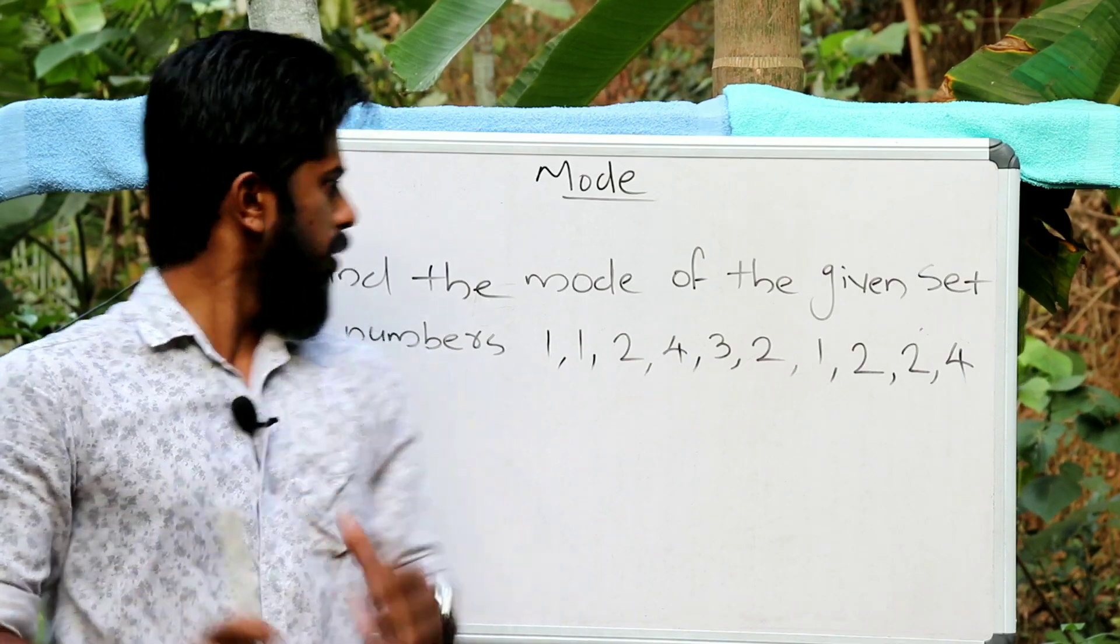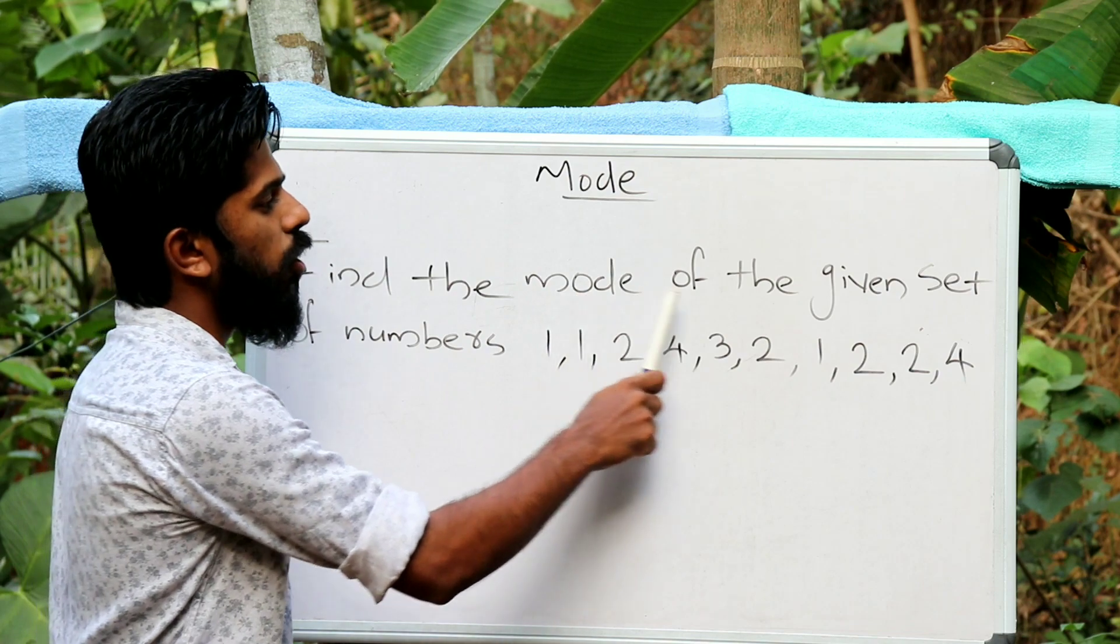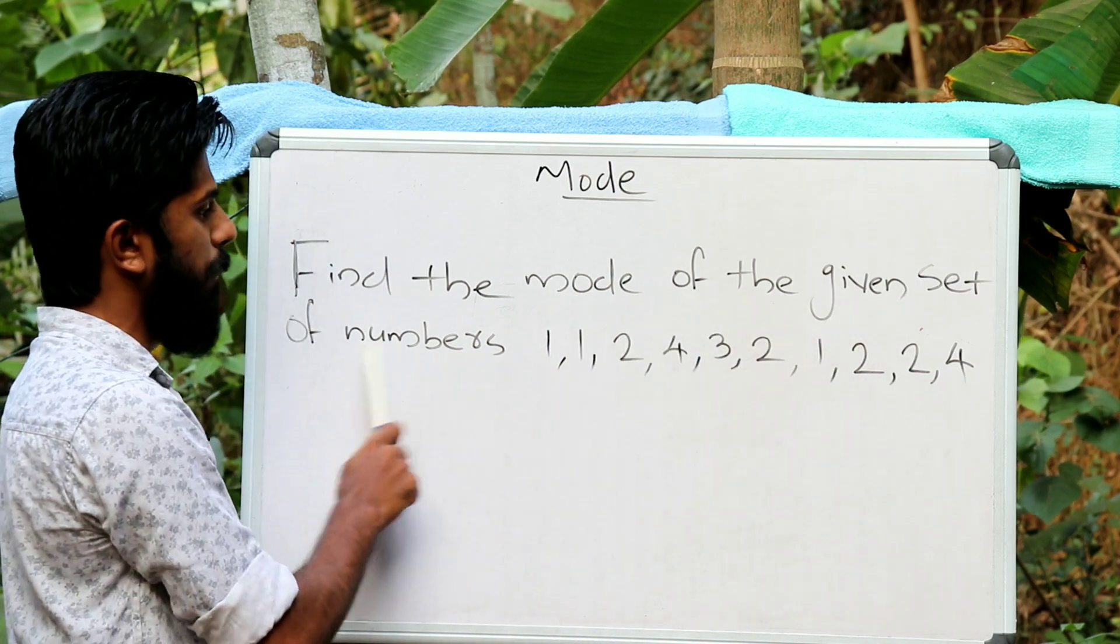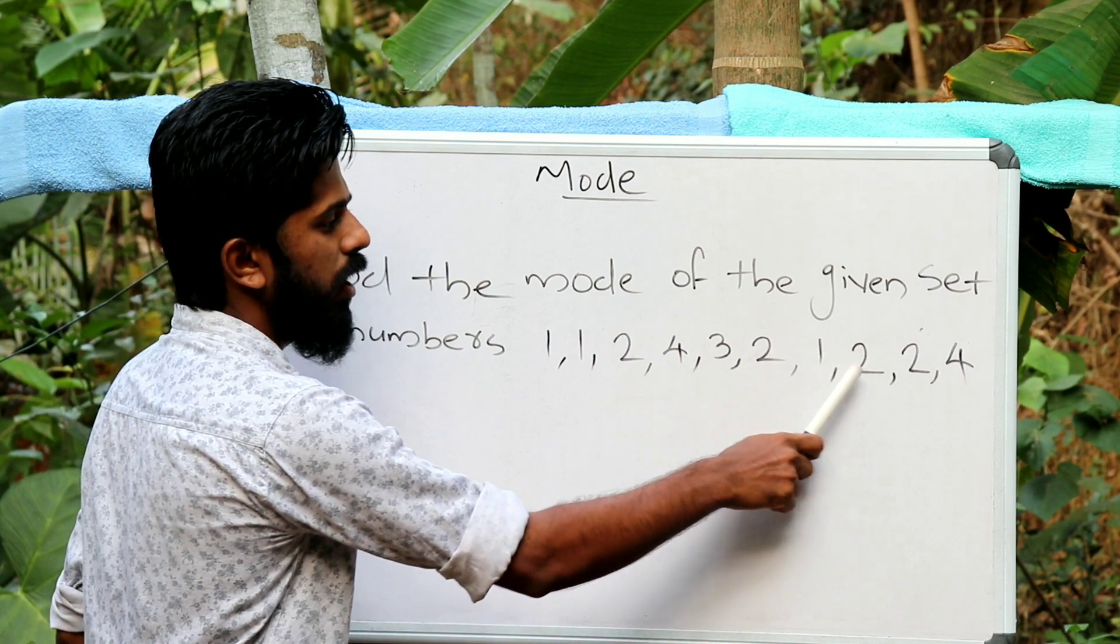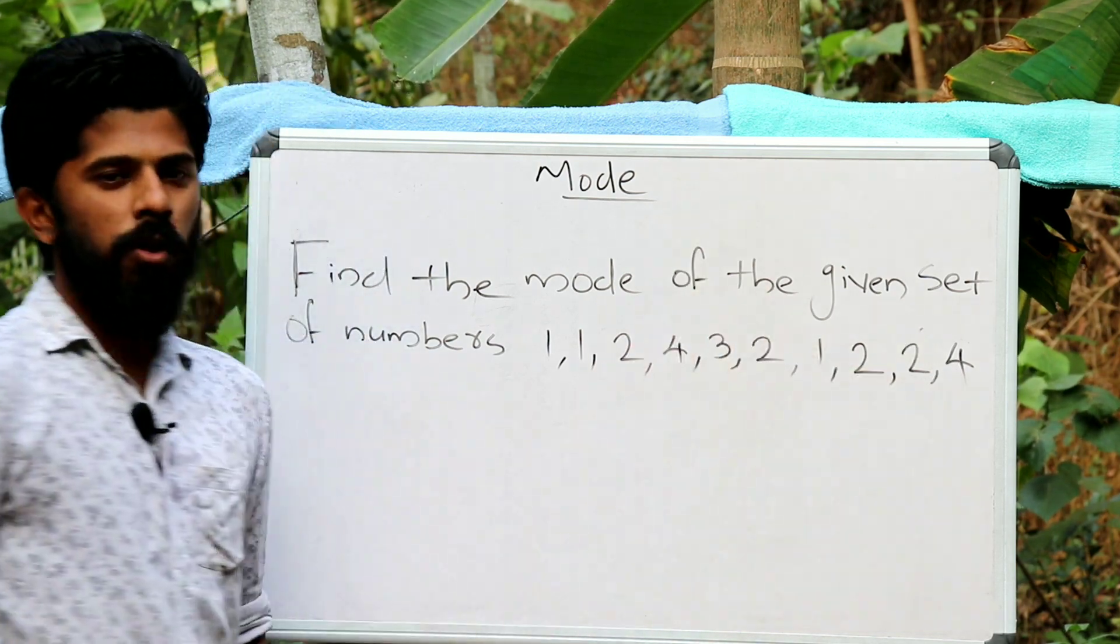Then we will ask a question about the mode. Find the mode of the given set of numbers: 1, 1, 2, 4, 3, 2, 1, 2, 2, 4. Okay, now we are going to talk about the set of numbers.